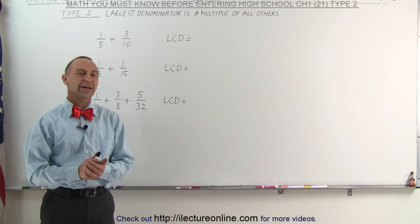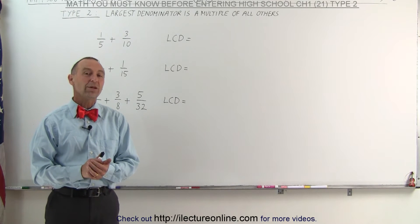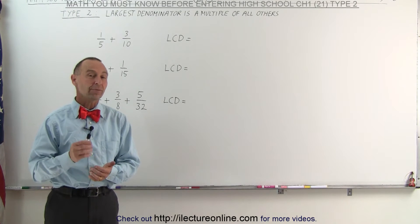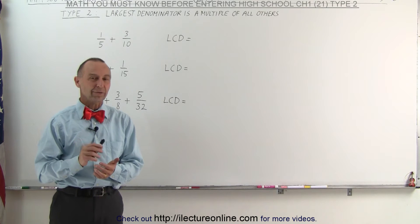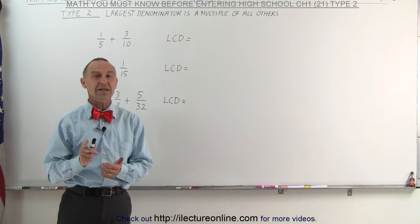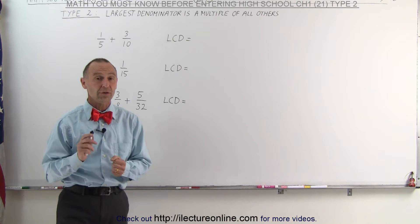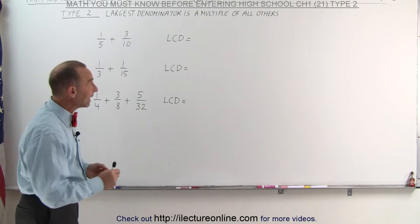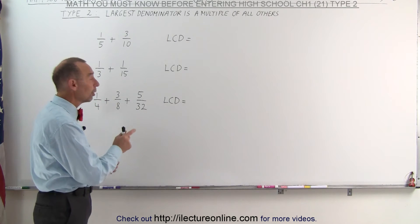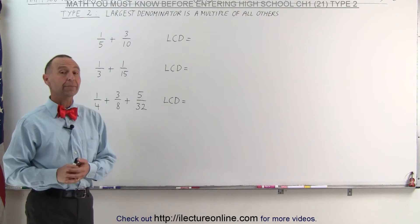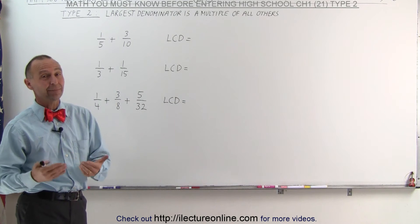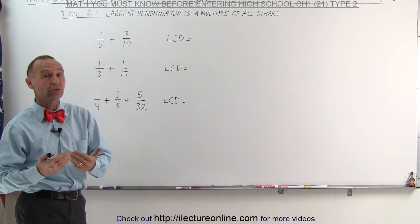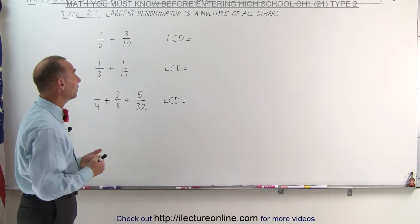Welcome to Electronline. When the denominators are not prime numbers, look carefully and see if the largest of the denominators is a multiple of all the other denominators. Because if it is, that simply becomes the lowest common denominator.